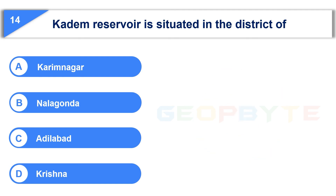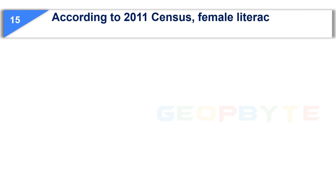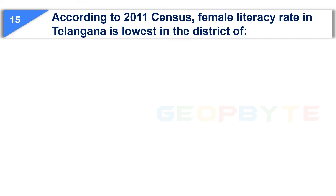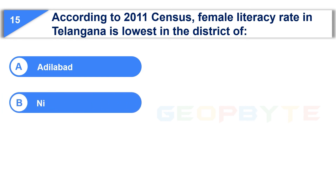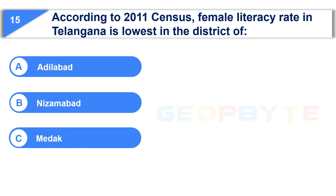Your time is up and the correct answer is Option C: Adilabad. The last question is: According to the 2011 census, female literacy rate in Telangana is lowest in the district of — Option A: Adilabad, Option B: Nizamabad, Option C: Mahbubnagar.